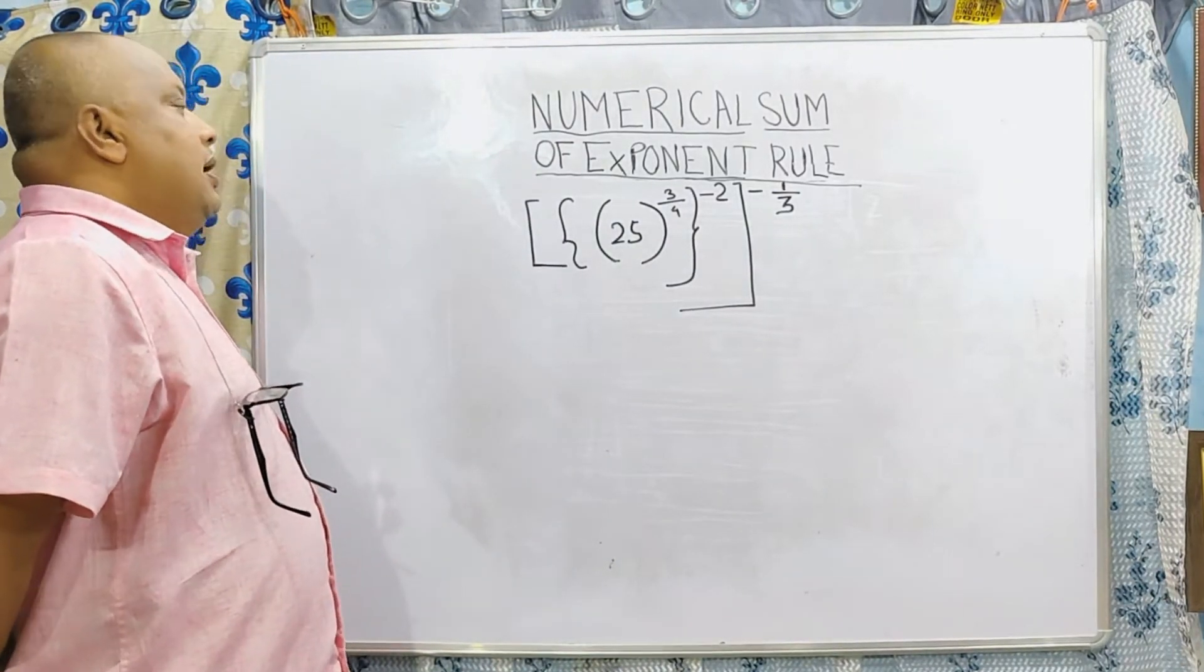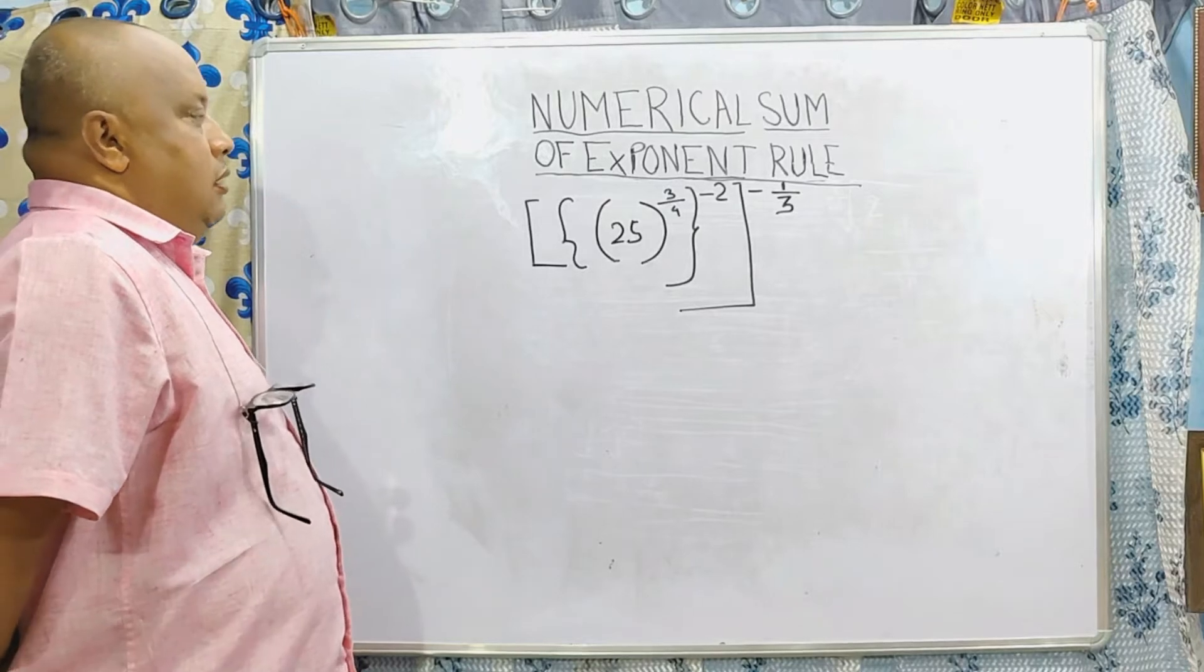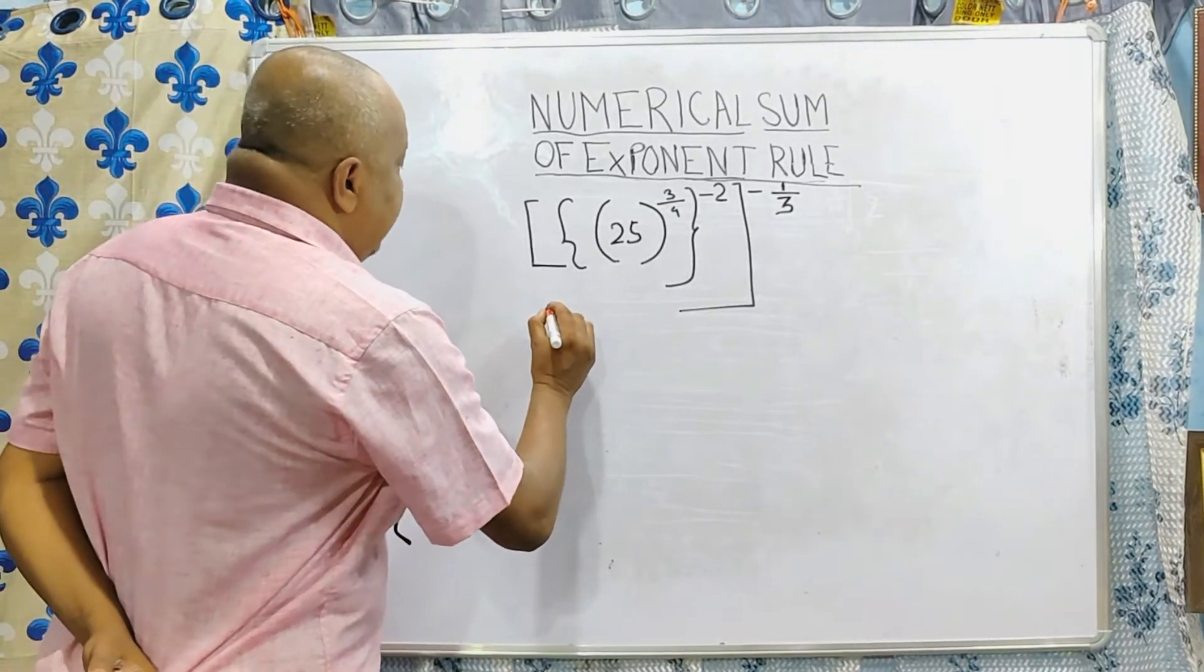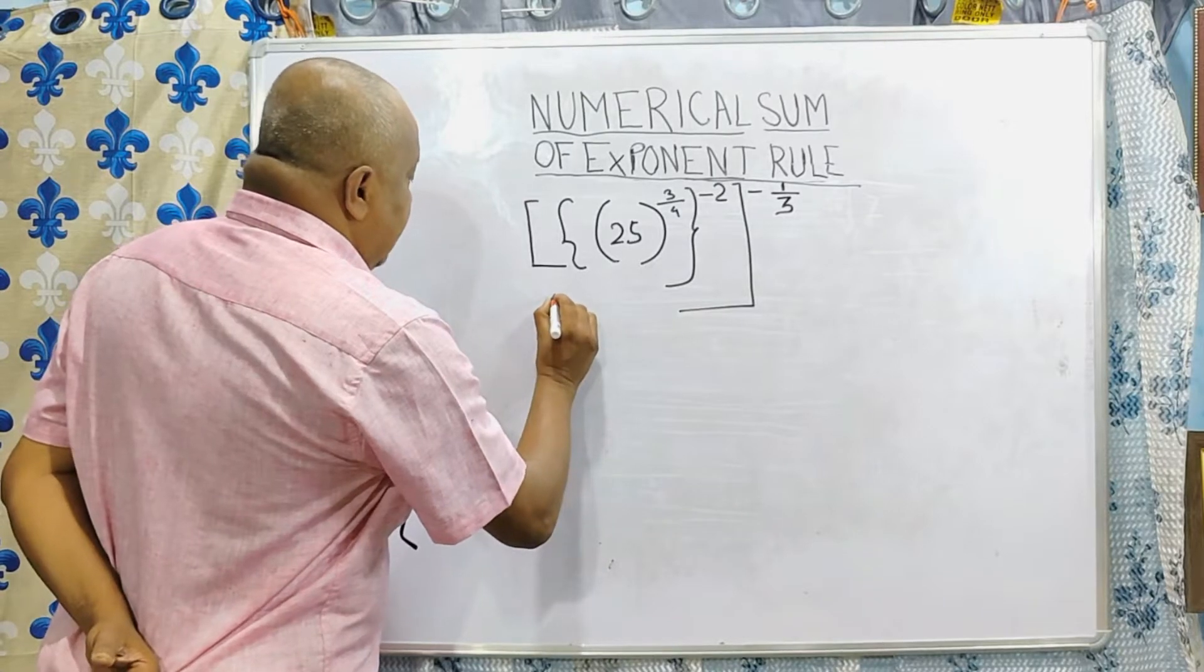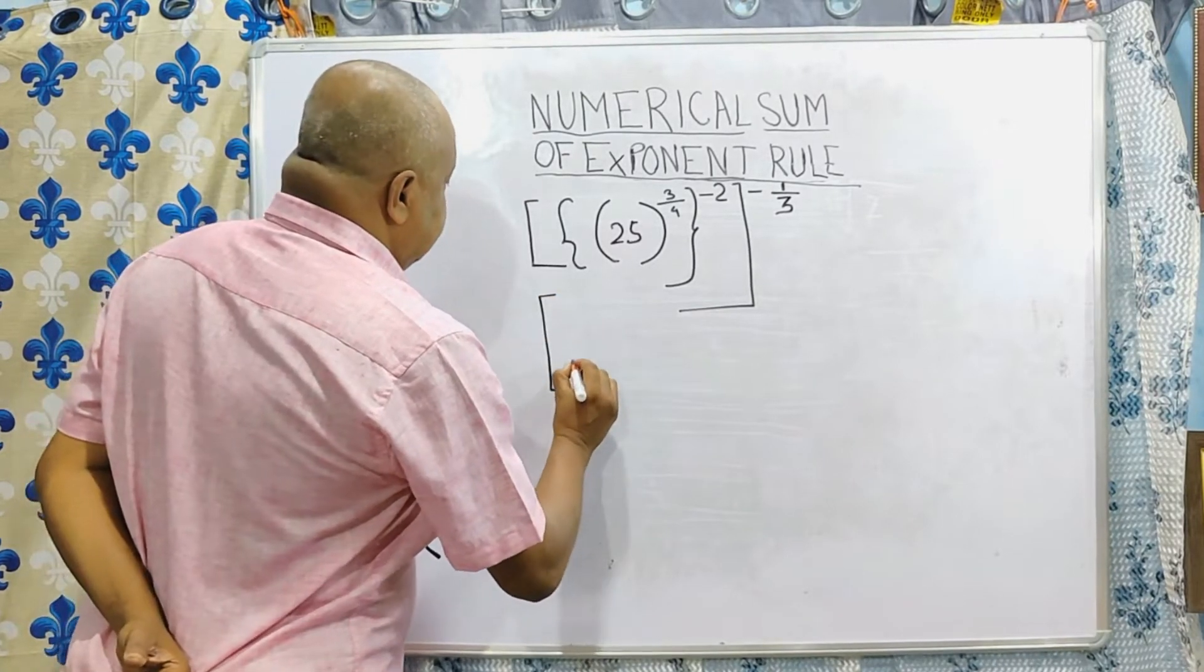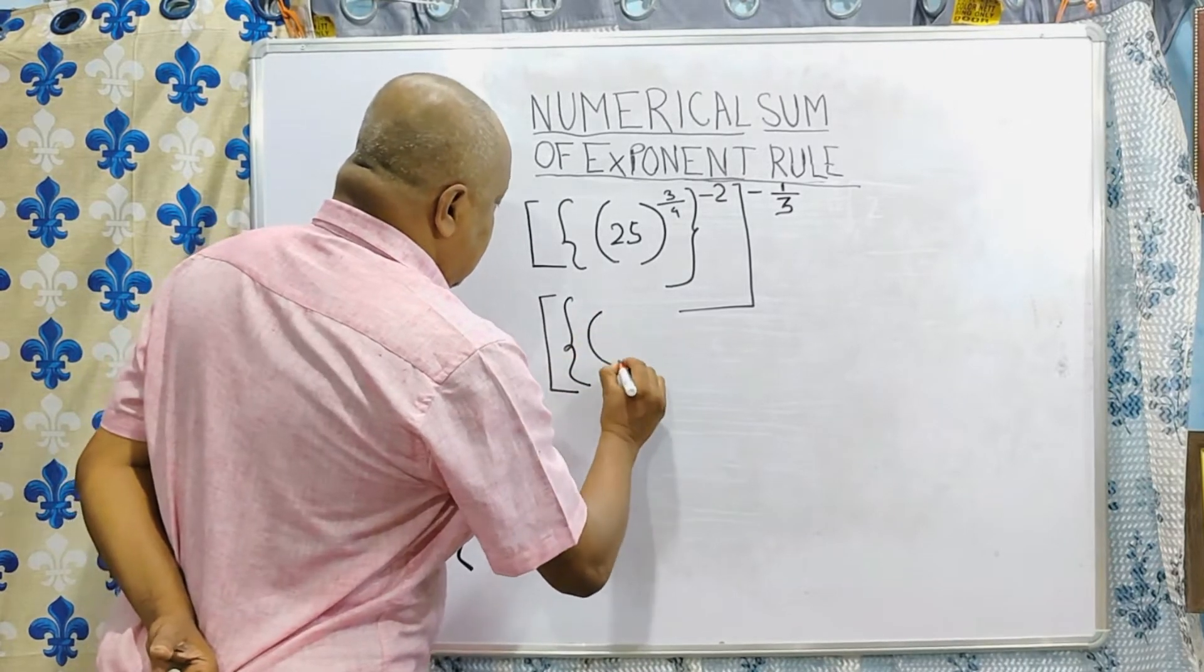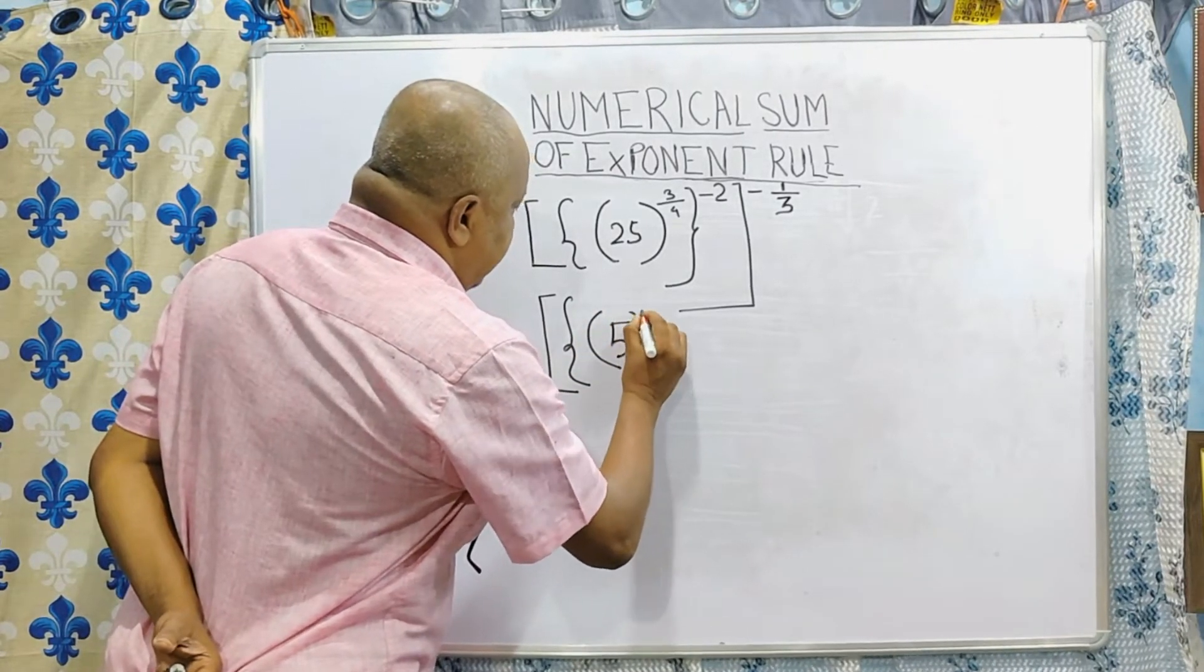Now you will have to solve this question on the basis of power rule. So, 25 can be written in this format, 5 squared.